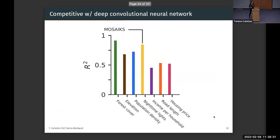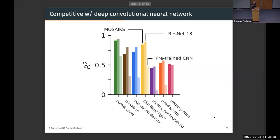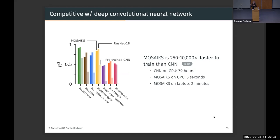Our papers show these are competitive performance results with state-of-the-art deep learning approaches that take a lot longer to run. Compared to a pre-trained CNN that also doesn't know the task ahead of time, we strongly outperform it. With full state-of-the-art deep learning, we're very competitive in terms of performance, but at a cost that is much, much lower — somewhere between 250 and 10,000 times faster to train, depending on your computing resources.